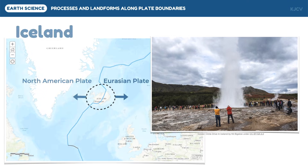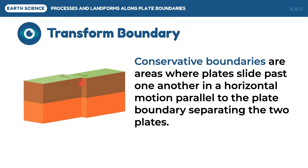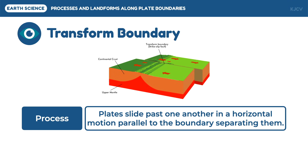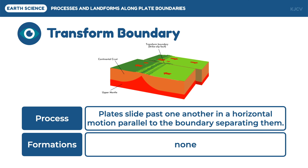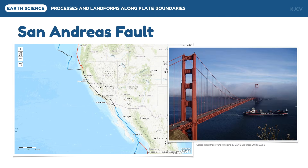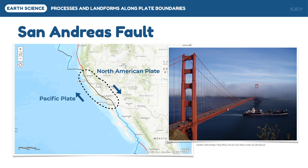The last plate boundary is the transform boundary. Transform boundaries, also known as conservative boundaries, are areas which do not create or destroy crust since the plates just slide past one another in a horizontal motion parallel to the plate boundary. Since plates just slide past one another, no formation occurs in this boundary. One common example is in the San Francisco Bay Area in the United States, which experiences a lot of earthquakes because of the horizontal and opposite movements of the Pacific and North American plates. This is also known as the San Andreas Fault.